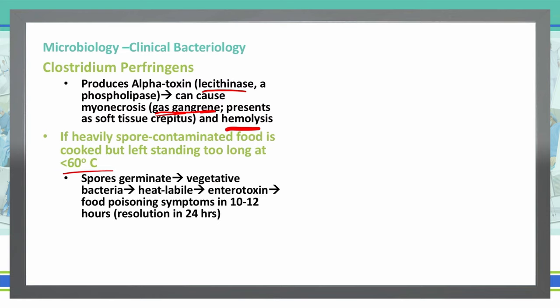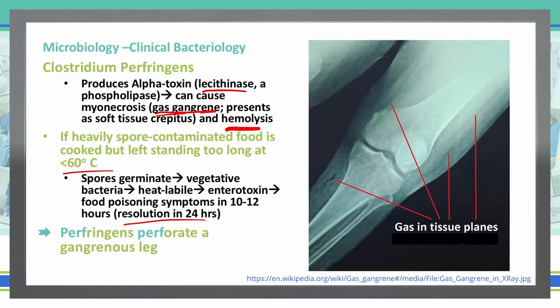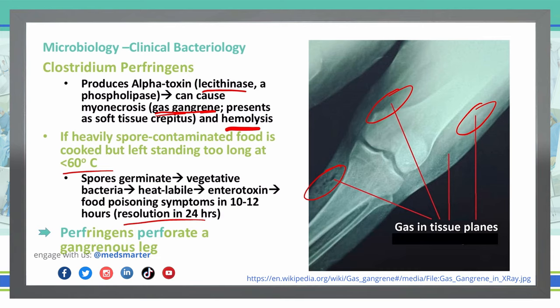Most of the time, these symptoms will resolve within about 24 hours. However, if it does migrate into tissues, then Clostridium perfringens can perforate a gangrenous leg, and you can actually see in an x-ray the gas bubbles that can form in various tissues of patients with Clostridium perfringens.